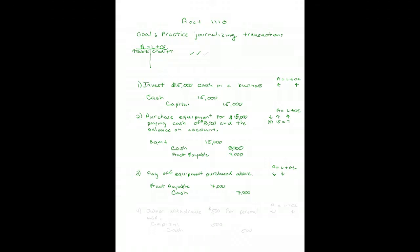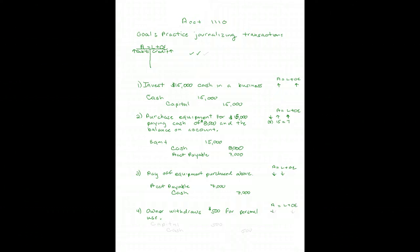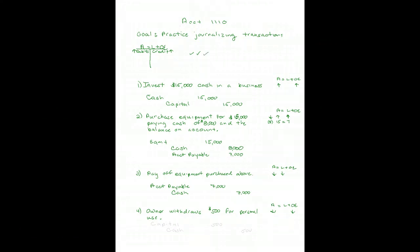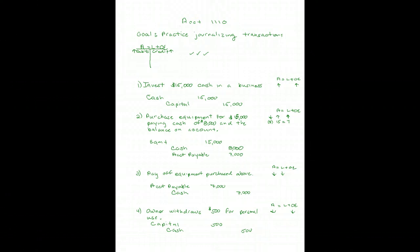Next transaction: the owner withdraws $500 for personal use. In the balance sheet equation, cash goes down and owner's equity goes down. To make owner's equity smaller, debit it — we debit the Capital (draw) account for $500. Then credit Cash for $500. This journal entry accomplishes what we would have done on the worksheet in chapter one.